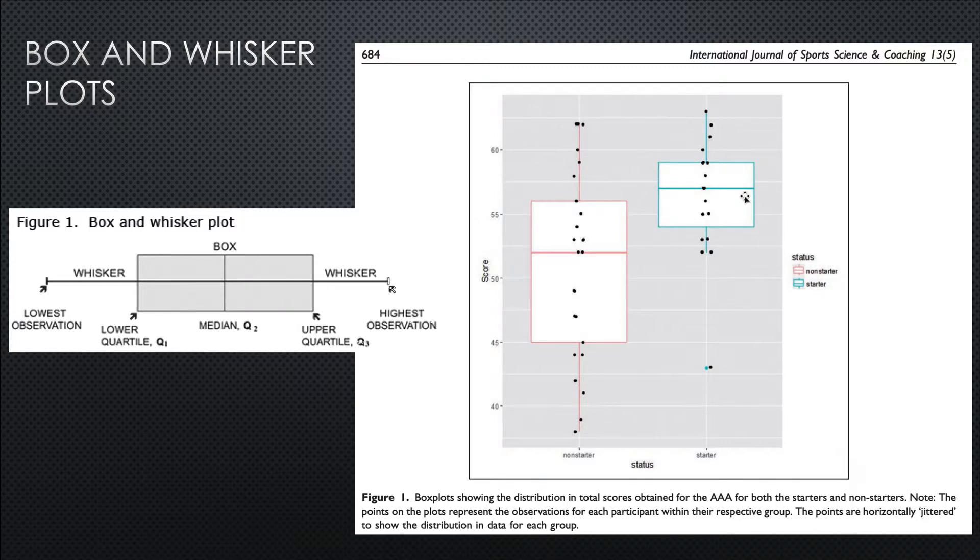For the starters, we see the formula that they used, their score, returned a higher median score, which was somewhere in between, maybe 57 or so.